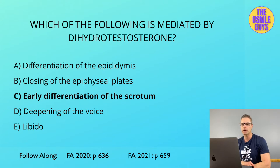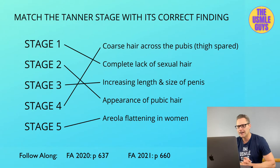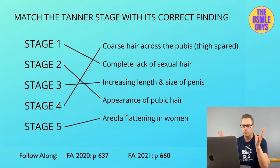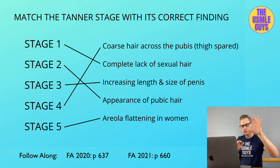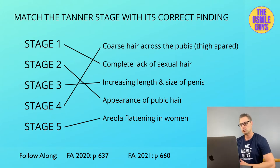Let's move on to a matching question on Tanner stages. Keep in mind Tanner stages aren't all-encompassing — we look at three specific areas: genitalia, breast, and pubic hair. Someone could be Tanner stage one in one area and stage three or four in another. Tanner stage one is characterized by a complete lack of pubic hair and, in females, a flat chest with raised nipples. Think of it as the pre-puberty stage.